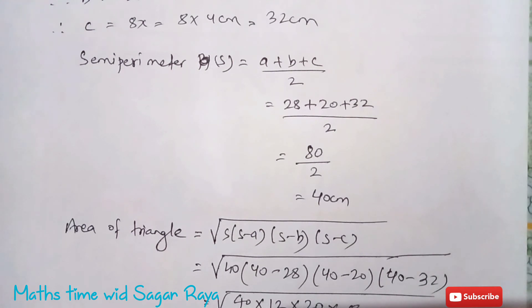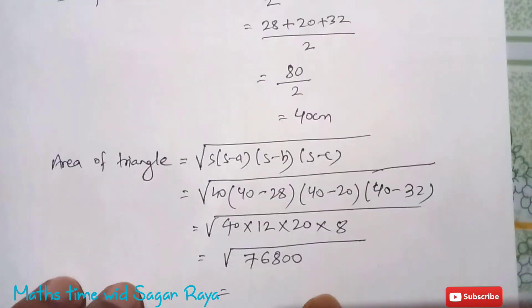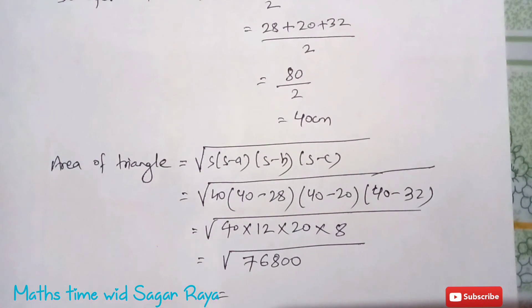So if you just multiply this you will get, if you just find the square root of 76800, you will get 277.12 cm square.